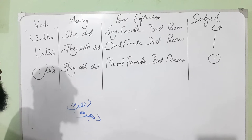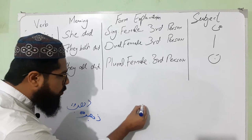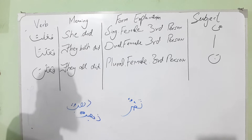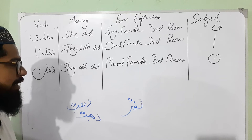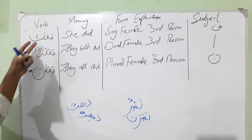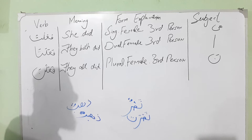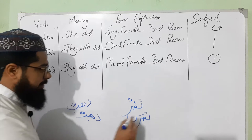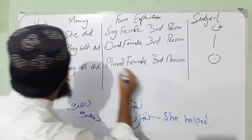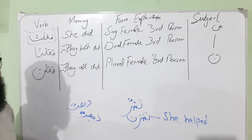Similarly, 'nasrun' is a root word meaning 'to help somebody.' If you make a word according to the formation of faalat from the root nasrun, the word would be 'nasarat.' Nasarat means 'she helped.' This is the criteria — this is the formula.